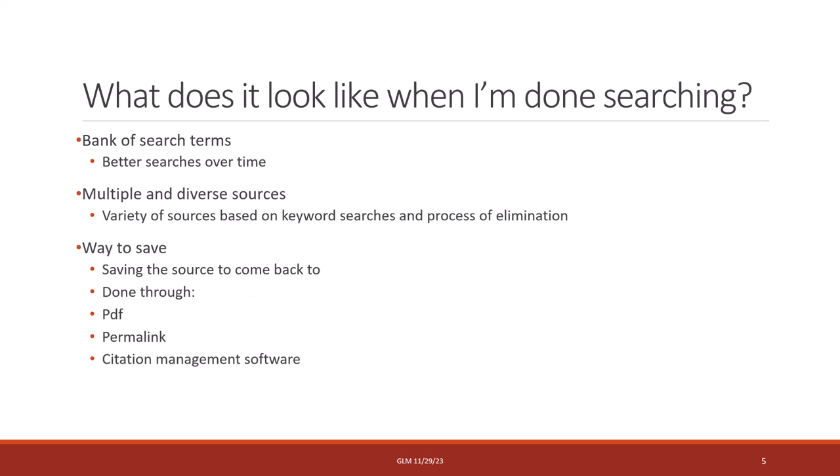Once your search is complete, organize your findings by creating a bank of search terms or keywords. Diversify your sources to aid in keyword searching and process elimination. Save your sources through options like PDFs, permalinks, or citation management software.